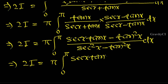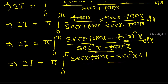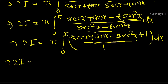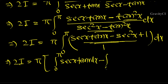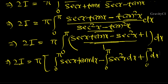Since sec²x - tan²x equals 1, the denominator becomes 1. We can write tan²x as sec²x - 1. So 2I equals π times integral from 0 to π of [sec x·tan x - (sec²x - 1)] dx, which splits into: integral of sec x·tan x dx minus integral of sec²x dx plus integral of 1 dx, all from 0 to π.